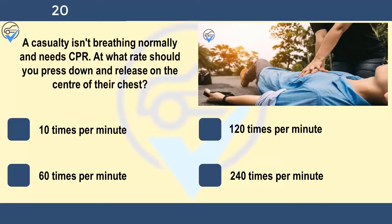A casualty isn't breathing normally and needs CPR. At what rate should you press down and release on the centre of their chest? 10 times per minute, 120 times per minute, 60 times per minute, or 240 times per minute. If a casualty isn't breathing normally, cardiopulmonary resuscitation (CPR) may be needed to maintain circulation. Place two hands on the centre of the chest and press down hard and fast — around 5 to 6 centimetres, about twice a second.